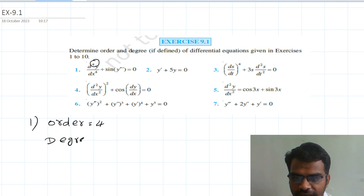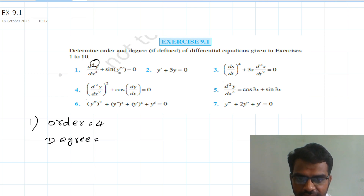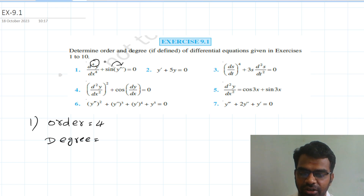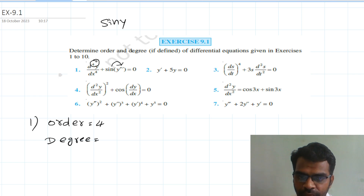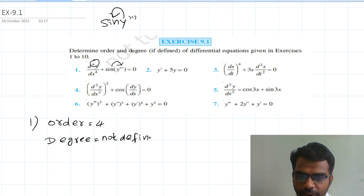Next, degree. The highest power value appears to be 1. But there is an important issue — there is a derivative inside the sin function: sin(y'''). We have a derivative with sine — d³y/dx³ inside sine. So the derivative inside the trigonometric function — degree is not defined.